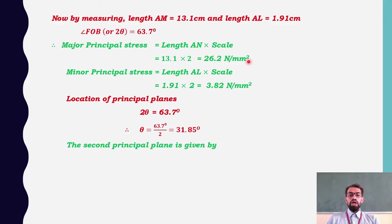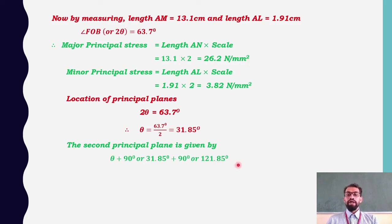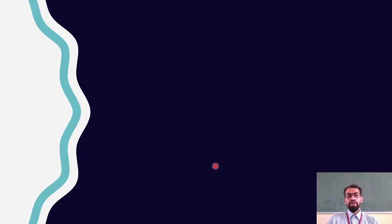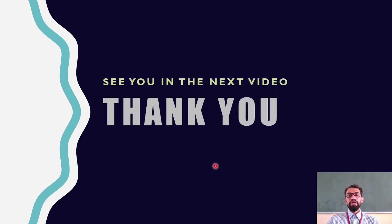The location of principal planes: theta = 63.7 ÷ 2 = 31.85 degrees for the first principal plane. The second principal plane is at theta + 90 = 121.85 degrees. These are the two numericals solved related to Mohr's circle. Thank you and see you in the next video.